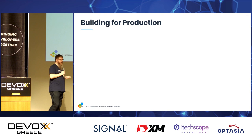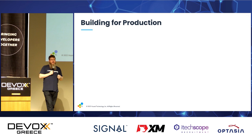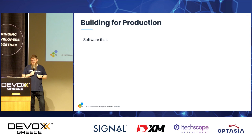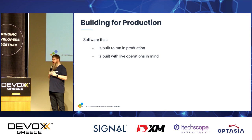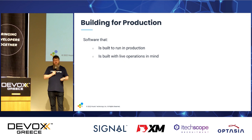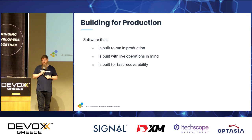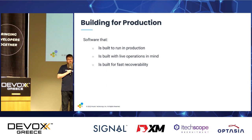What is operable software? First and foremost, it is software that's built to run in production. Nobody cares about your local machine. If you write software and it doesn't go into production and users don't use it, did you actually write any software? It's built with the people who are going to run it in mind — whether that's you, someone else in your team, or a different team entirely. It's also built for fast recoverability, knowing it's in a production environment, built with resiliency in mind.